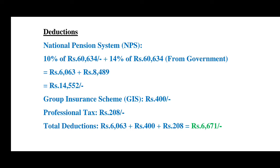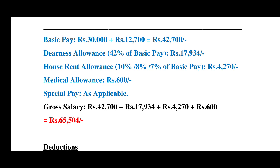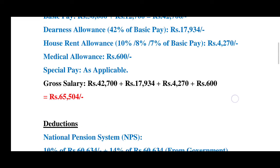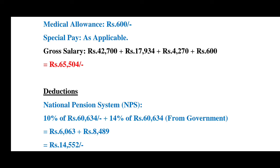To calculate NPS: basic pay plus Dearness Allowance is ₹42,700 plus ₹17,934 equals ₹60,634. The employee contributes 10% of ₹60,634, which is ₹6,063. The government internally contributes 14% of ₹60,634, which is ₹8,489.